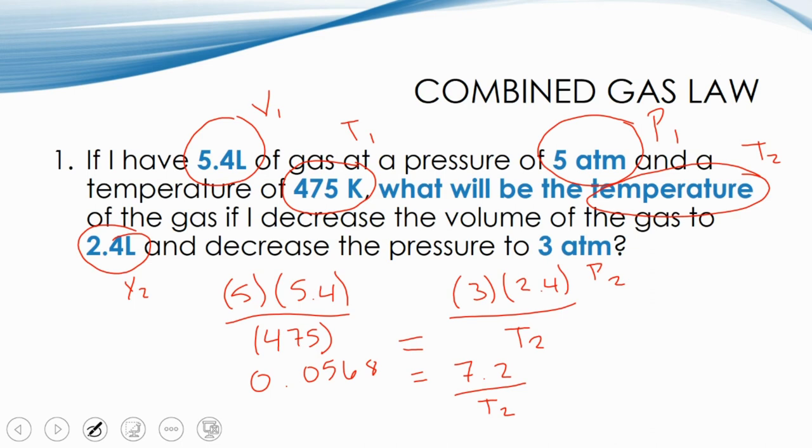So here we're going to use some of our algebra knowledge. I'm going to go ahead and just write it here on the side. And I'm going to multiply both sides by T₂. So if I multiply both sides by T₂, I'm going to end up with 0.0568 times T₂ equals to 7.2. Now, if I do that, I can then divide from both sides by 0.0568. So I'm going to do it from both sides. Now, once I simplify that, I end up with T₂ equals 7.2 divided by 0.0568.